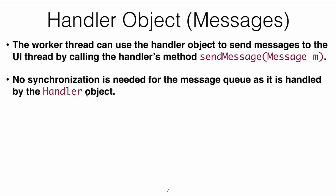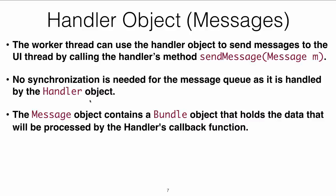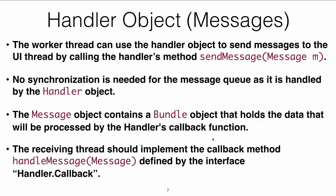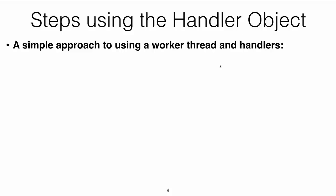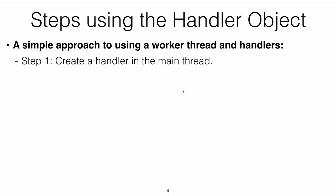The handler object is synchronized so you don't need to worry about synchronization. The message object contains a bundle object that holds the data to be processed by the handler callback function. The main thread has to implement a callback function with a method called handleMessage, defined in the interface called HandlerCallback. The steps to use the handler object: step one — create a handler object in the main thread.